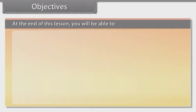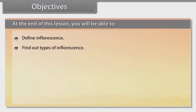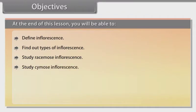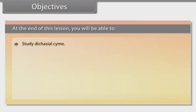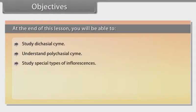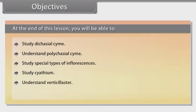Objectives: At the end of this lesson you will be able to define inflorescence, find out types of inflorescence, study racemose inflorescence, study cymose inflorescence, understand types of cymose inflorescence, study solitary cyme, understand monochasial cyme, study dichasial cyme, understand polychasial cyme, study special types of inflorescences including cyathium, verticillaster, and hypanthodium.